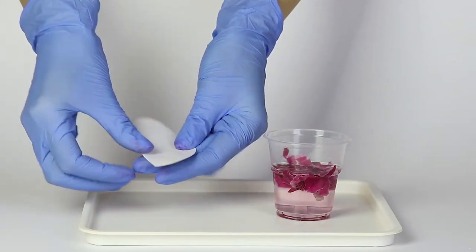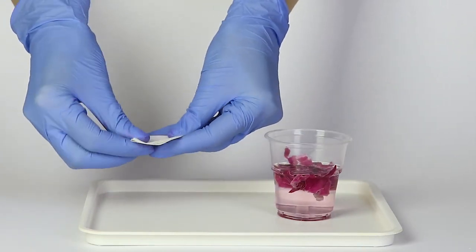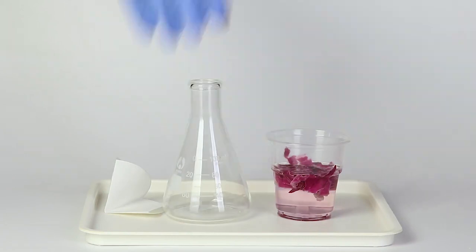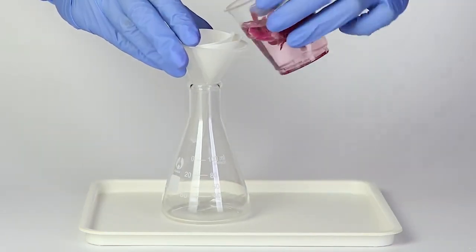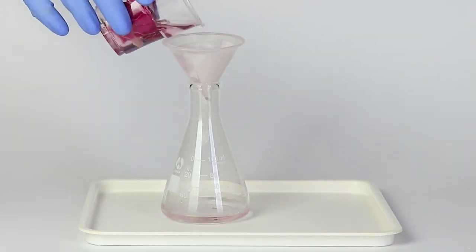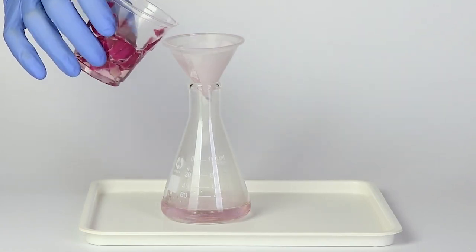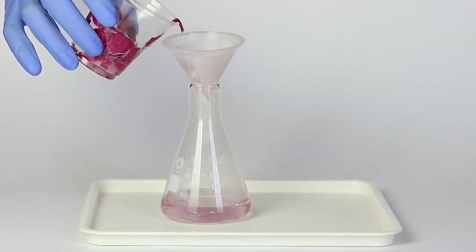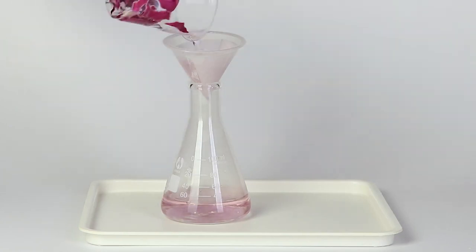Take the filter paper and fold it as shown in the video. Now take the flask and put the funnel into it. Then put the folded filter paper into the funnel. Gradually pour the solution out of the disposable cup into the funnel to filter out the petal fragments.